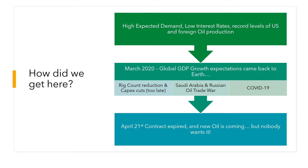These companies were producing record levels of US and foreign oil. That all changed in March 2020 when global GDP growth expectations came back to earth. Oil companies were slow to respond because they had issued so much debt — they were reluctant to cut rigs and production because they needed the revenue to pay it back. They started reducing rig counts and cutting capital expenditures in March, but it was a little too late.